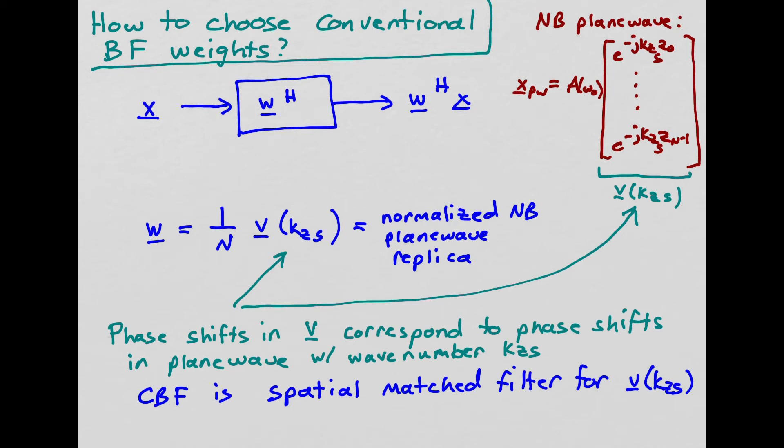So V of KZs is a plane wave replica that includes all of these phase shifts for a plane wave signal with vertical wave number KZs. We can define our conventional beamforming weights to be just a normalized version of that replica vector. And what that will do when we apply them in the standard structure, we apply W Hermitian X. The Hermitian is going to flip the sign on all those phase shifts, causing that single plane wave to add constructively in the beamformer.